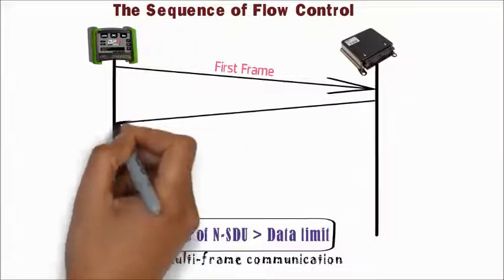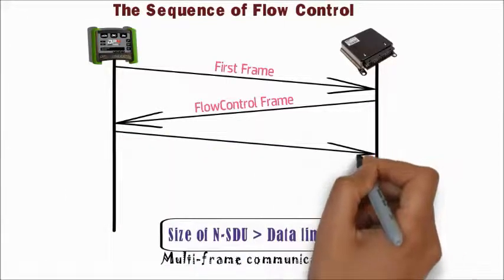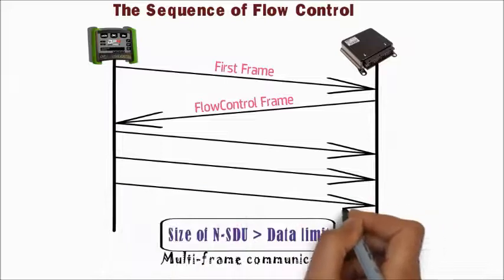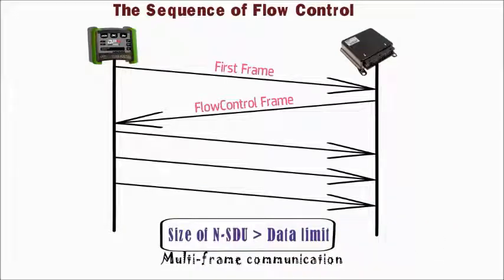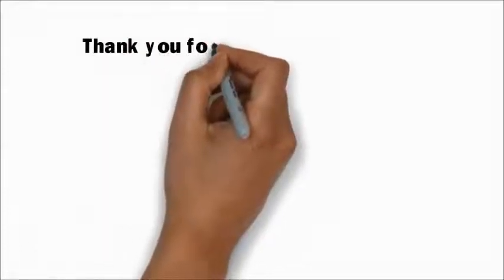Then the receiver responds with a flow control frame to the transmitter. The transmitter then sends a series of consecutive frames one after the other in the correct order. Each consecutive frame carries one piece of NSDU respectively.